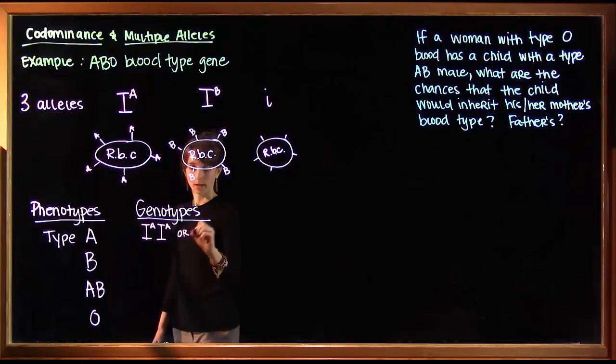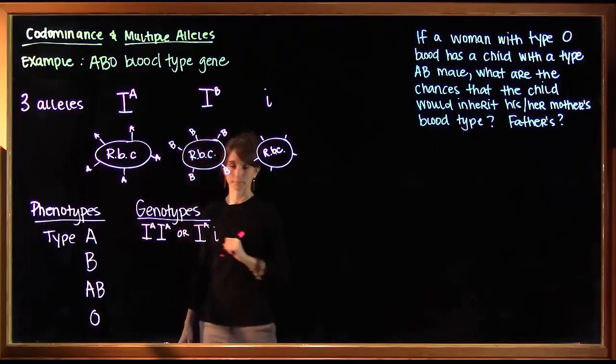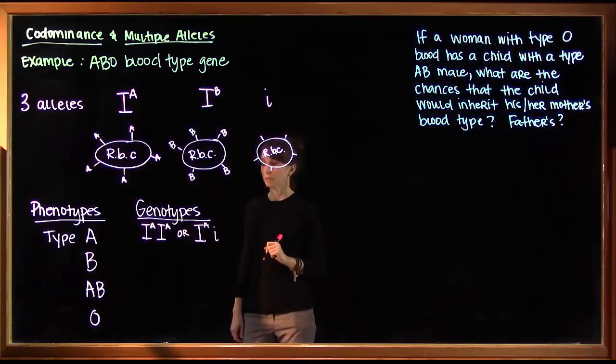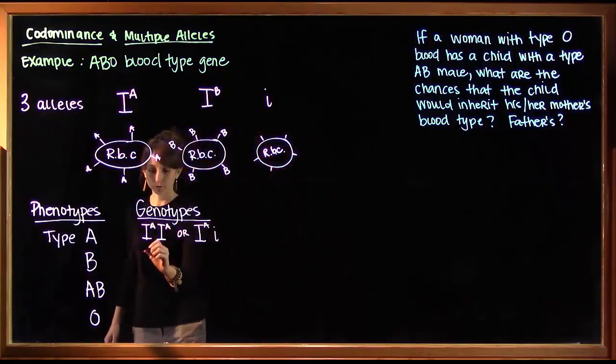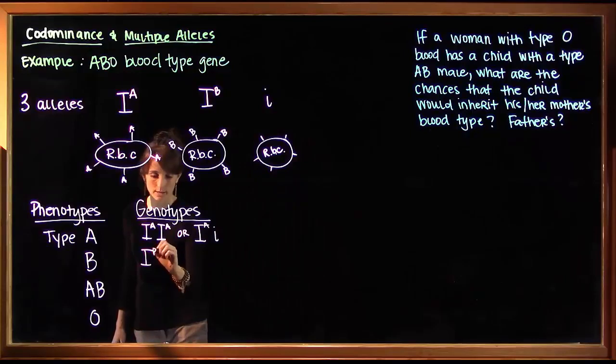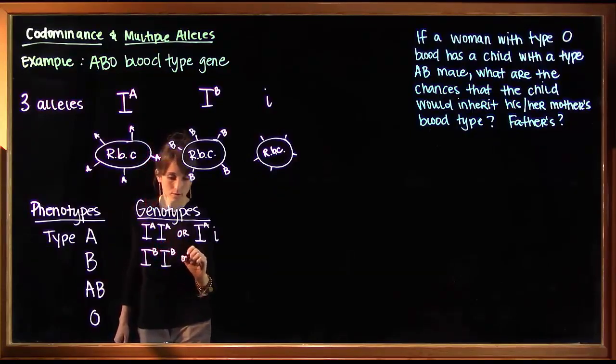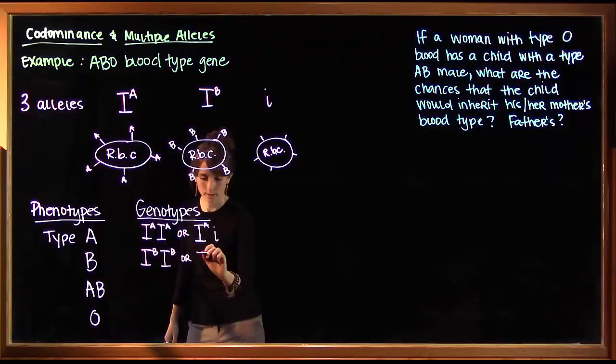Similarly, a person with the type B phenotype can be homozygous or heterozygous.